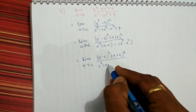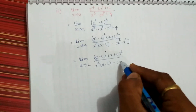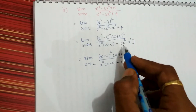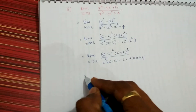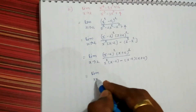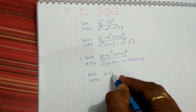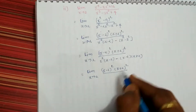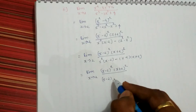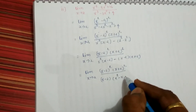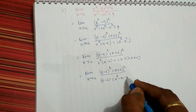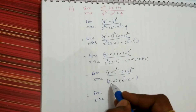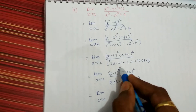Again, x square times x minus 2, and here it is x minus 2 times x plus 2 — that is a square minus b square, so a minus b times a plus b will be the factors of it. So limit x tends to 2: x minus 2 whole square times x plus 2 whole square. Here, x minus 2 and x minus 2 is common, so x minus 2 will get cancelled out.